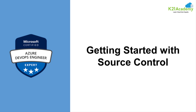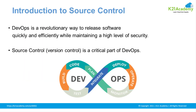Why do we need source control? What is its use? In DevOps, the main use of source control is to save your code and ensure it is versioned, so that if you want to track all previous releases, you can easily do it. And if you want to roll back to a previous version, source control makes that possible.